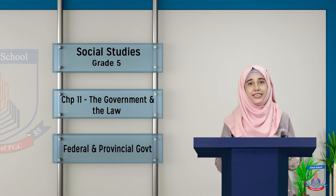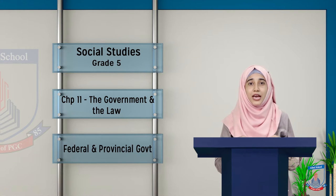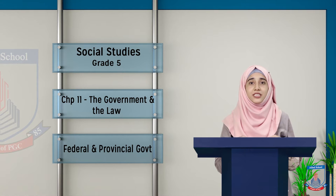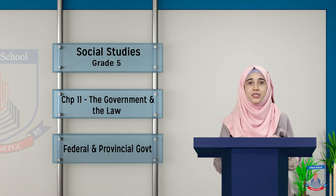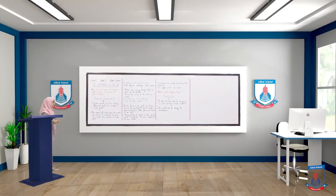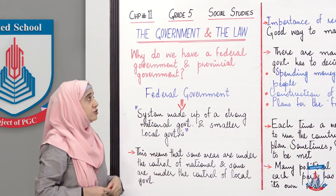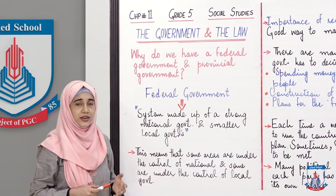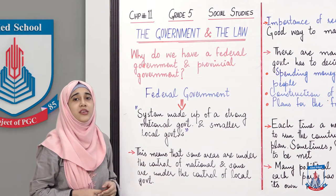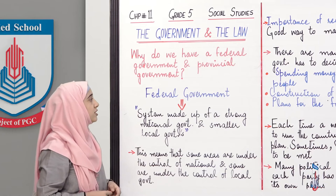Assalamu alaikum dear students, kaise hai aap sab. My name is Anam Rabani and I am your teacher of social studies for grade 5. Bacho, hum parh rahe the chapter number 11 - The Government and the Law. Aur aaj humne padhna hai ke why do we have a federal government and provincial government, so let's study.